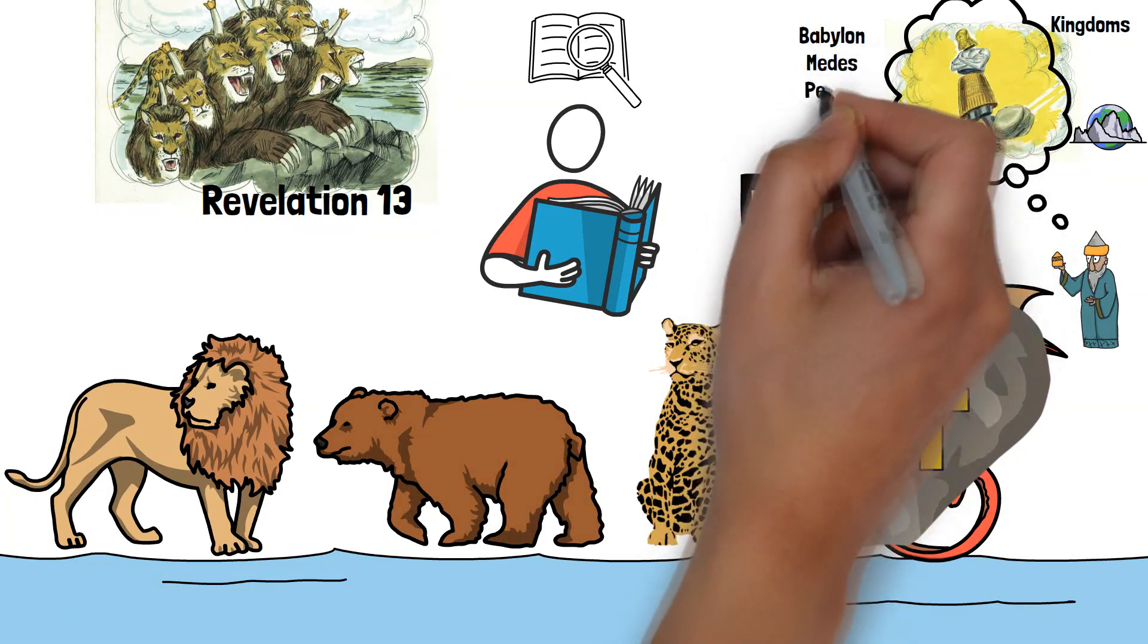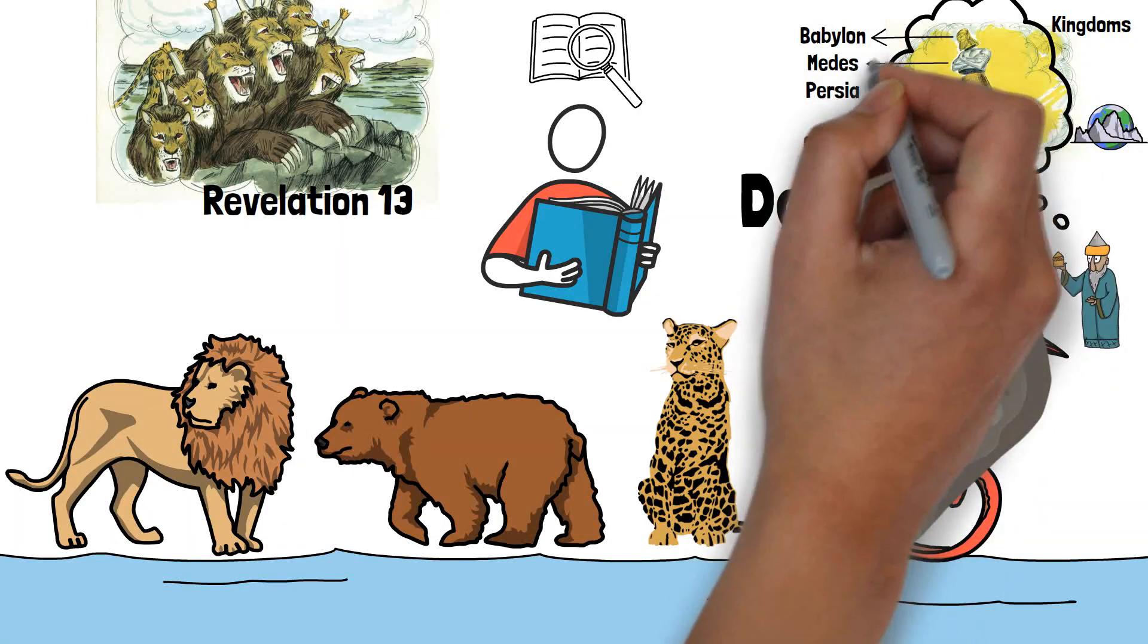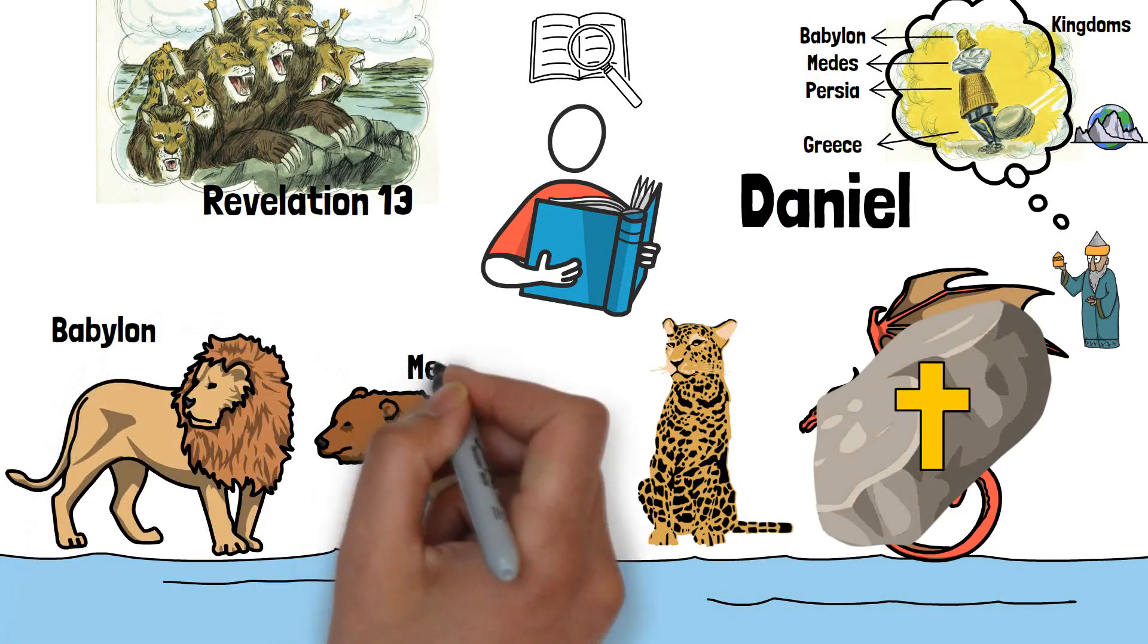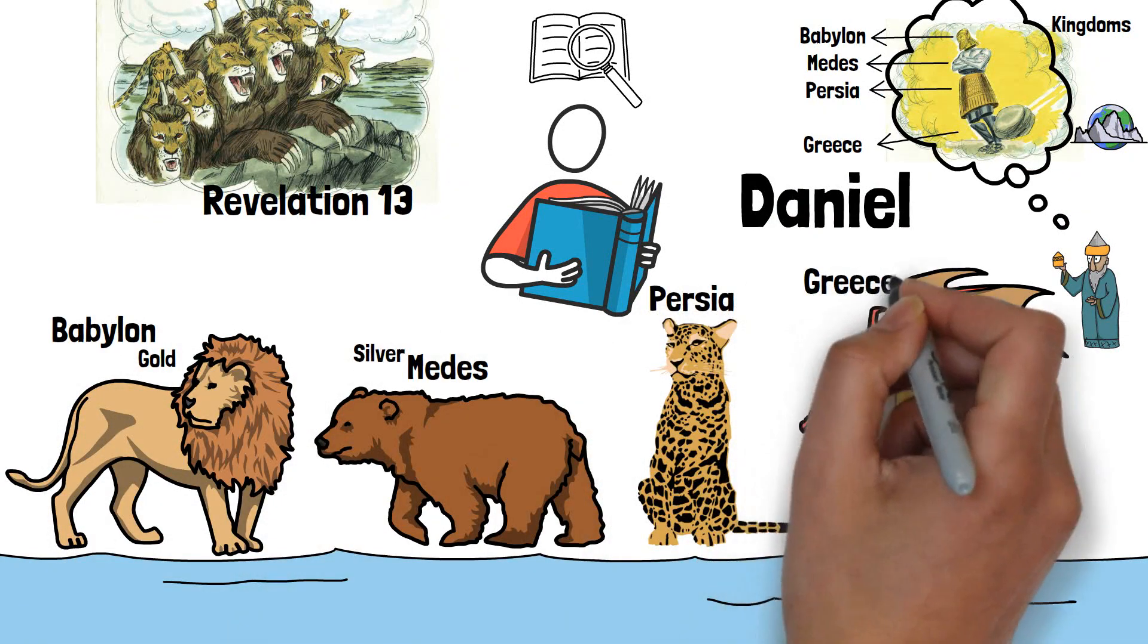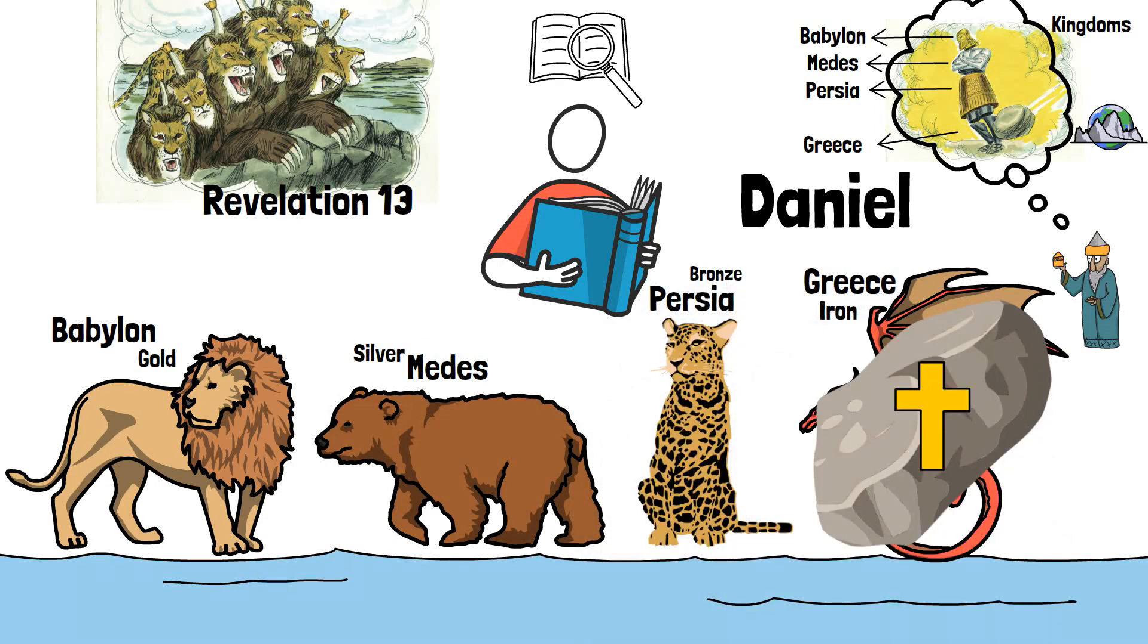And as the narrative of Daniel unfolds, the reader discovers that the statue, as represented in descending order, represents the kingdoms mentioned within the Book of Daniel. These are Babylon, the Head of Gold, the silver being the Medes, the bronze being the Persians, and finally, the kingdom of Greece is represented in the iron.